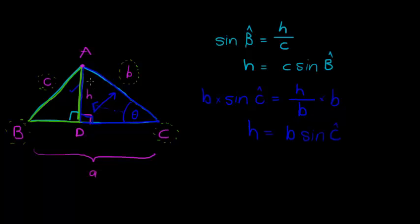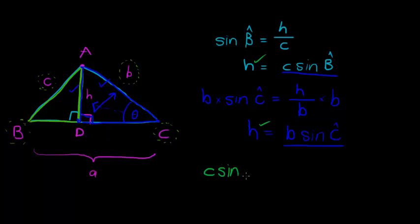Both triangles share the same height — the line from D up to A. So H is the height for both triangles, meaning the two expressions for H must be equal. H equals C times sine B, and H equals b times sine C. Therefore, C sine B equals b sine C.